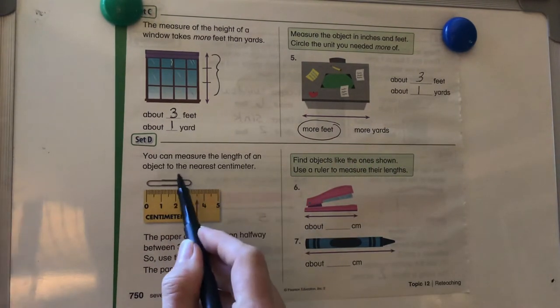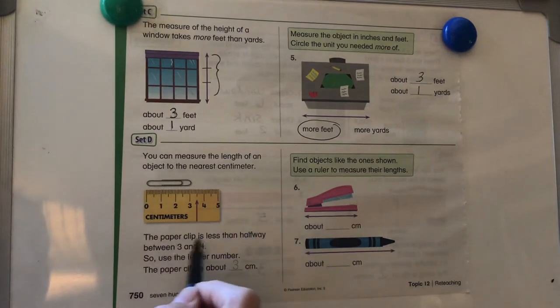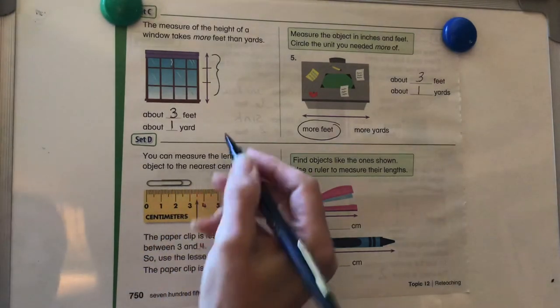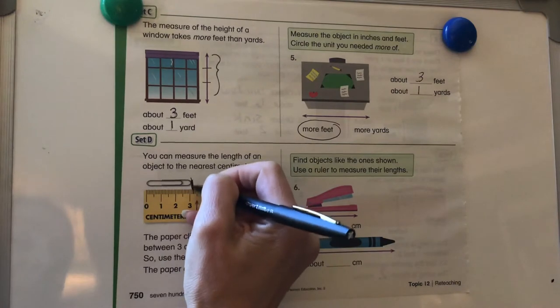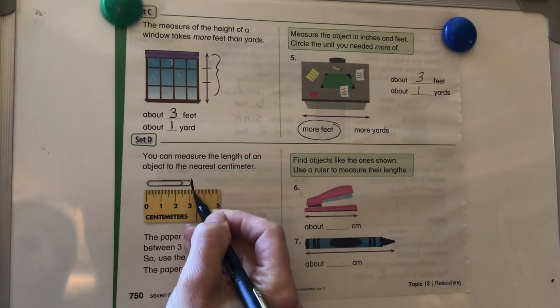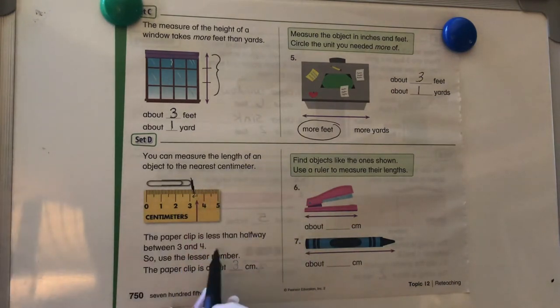You can measure the length of an object to the nearest centimeter. The paper clip is less than halfway between three and four. So here's our paper clip here. It's a little bit over three, but it's still lower than the halfway mark. So we're going to use the lesser number. The paper clip is about three centimeters.